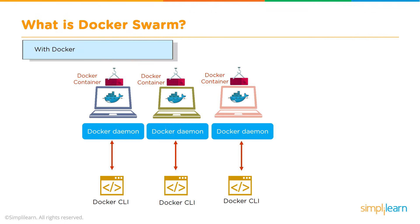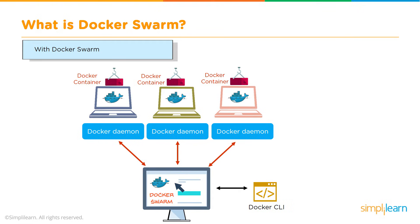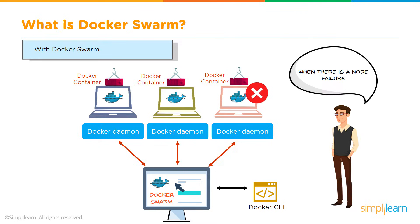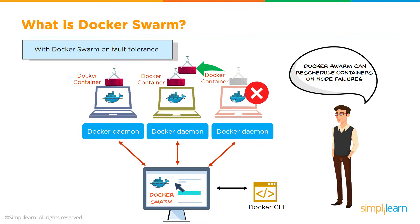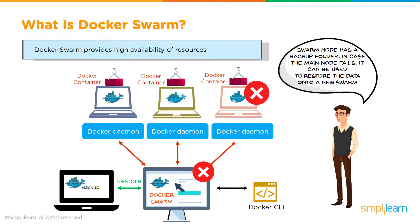Consider an environment with three Docker containers running. What happens if something changes — for example, one of our containers fails? Because the environment is set up as a Docker Swarm, the Swarm manager is able to reschedule containers to correct that failure. The Swarm node has full backups and full redundancy for any failures that occur, and all of this work is done through the command line interface.